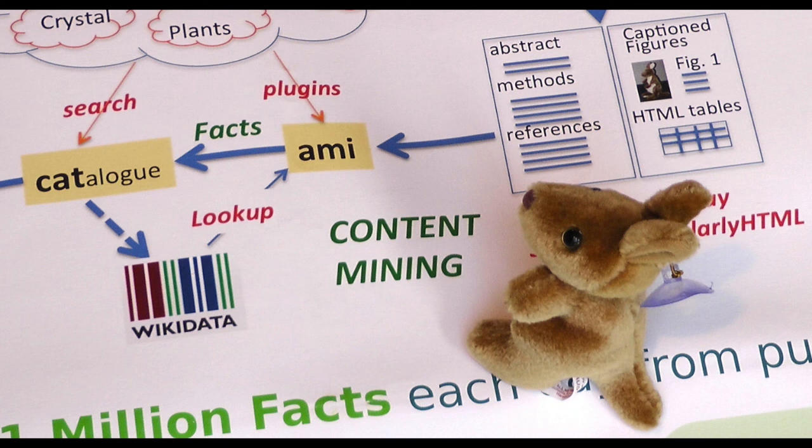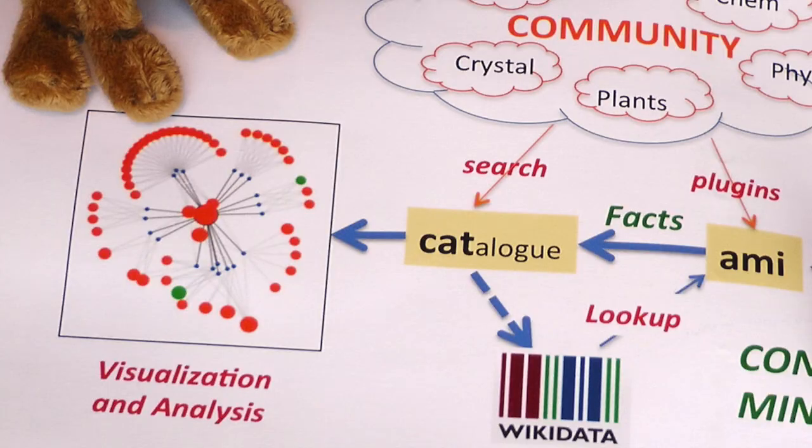Amy is where the mining takes place. We have mining tools for sequences, species, chemistry, phylogenetic trees, and you can create your own searches using regular expressions or templates. The facts produced by Amy can either be stored in CAT, which is an elastic search query system, or pumped into Wikidata or other systems such as Xenodo.